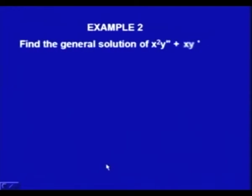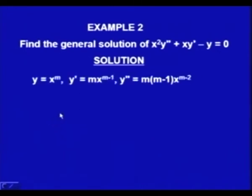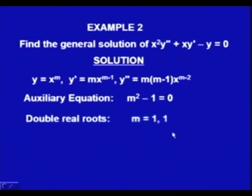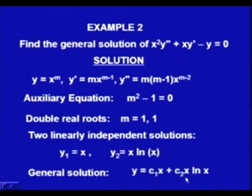Example 2: Find the general solution of x² y'' + xy' − y = 0. Substituting y = x^m, the auxiliary equation becomes m² + (1−1)m − 1 = m² − 1 = 0, giving roots m = 1 and m = −1 — a double root m = 1... Actually here a = 1, so a−1 = 0, giving m² − 1 = 0, roots m = ±1. Since these are distinct real roots, the solutions are y₁ = x and y₂ = x^{−1}, giving general solution y = c₁ x + c₂ x^{−1}.